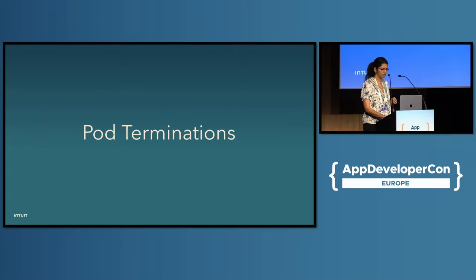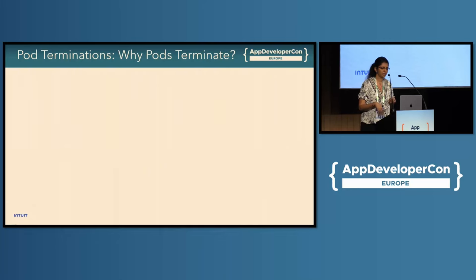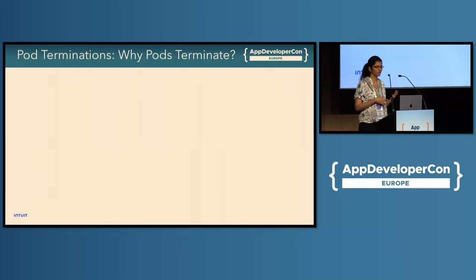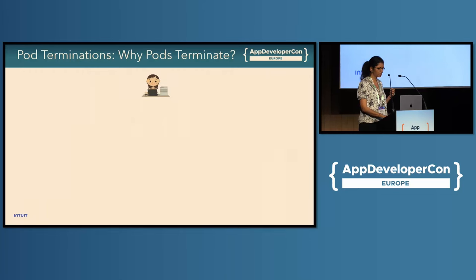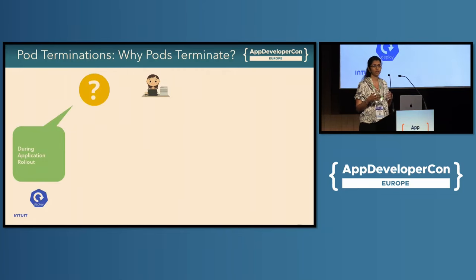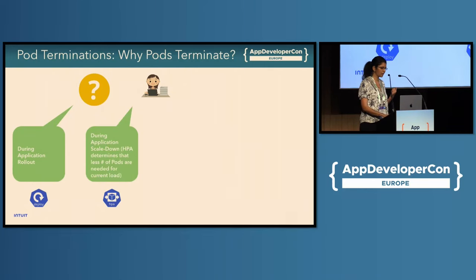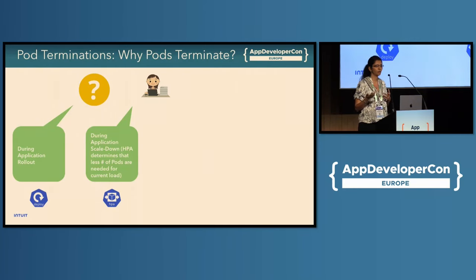Let's look at pod termination and the gotchas around it. In Kubernetes, you must almost expect pods to terminate, because a lot of normal operations bring down pods, nodes, and clusters. As a service owner, you have to expect your pods to go down. Common reasons include: during an application rollout when old pod versions go down and new ones come up; application scale-down, where the HPA determines fewer pods are needed and scales down from say 50 pods to 10.